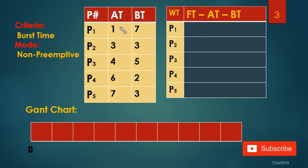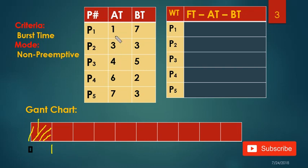I'm going to check from this list whether there is any process which comes at zero. No, there is no process which comes at zero, so the CPU has to sit idle waiting for a process to come. Now at time one, I'm going to check — is there any process which comes at one? Yes, P1 comes at one, so I'm going to put P1 here. The burst time for P1 is 7, so 7 plus 1 is 8 — I'm going to put 8 here.